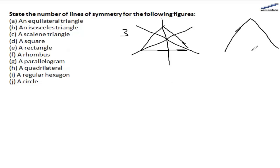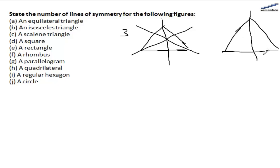For the isosceles triangle, only two sides are equal — these sides are equal but not the third one. So we only have one line of symmetry. If you draw it like this, these sides are not equal, so there won't be a line of symmetry. So, only one line of symmetry.